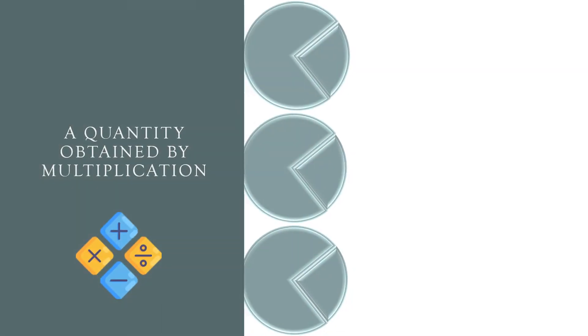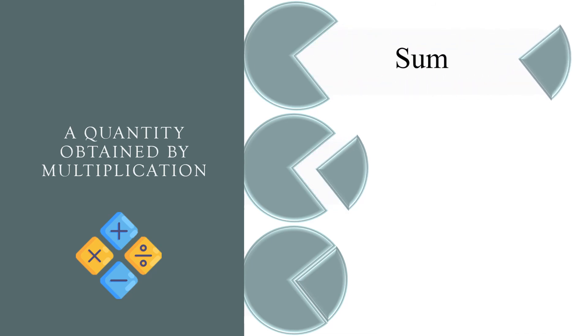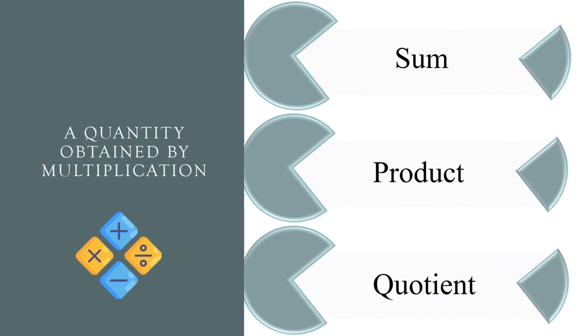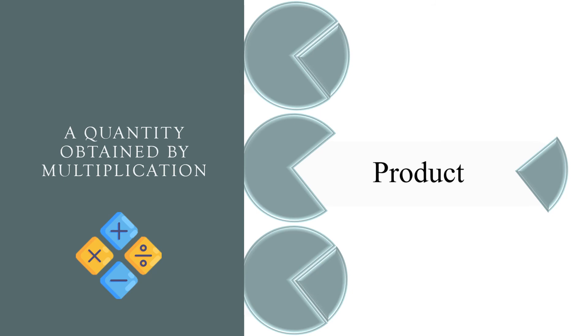A quantity obtained by multiplication. Sum, product, or quotient? The correct answer is product.